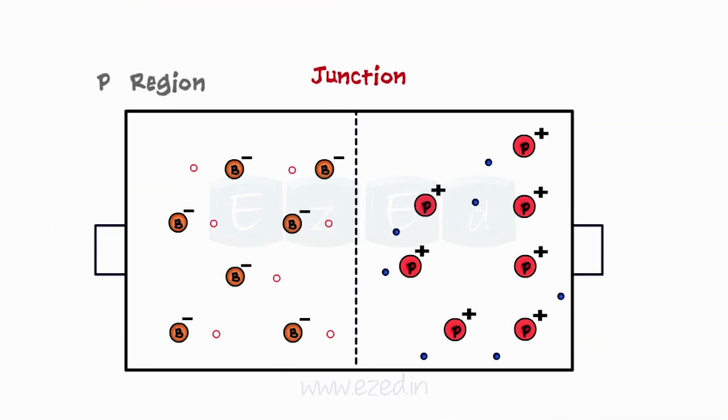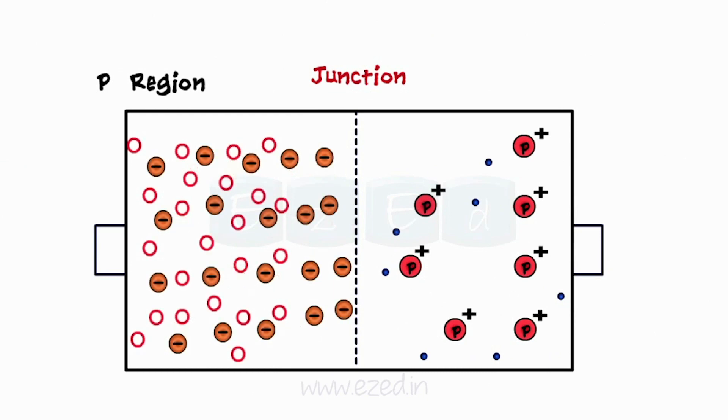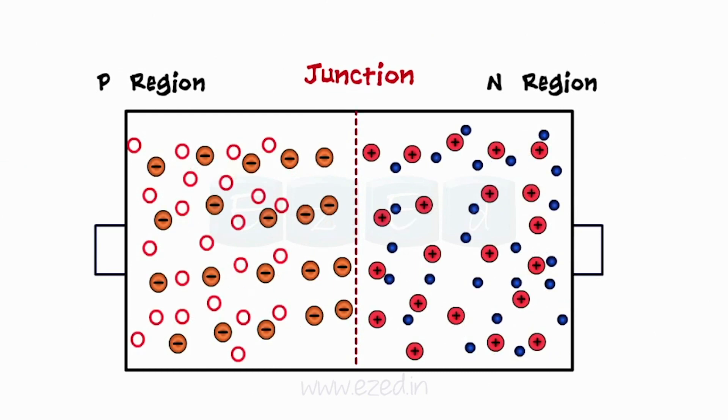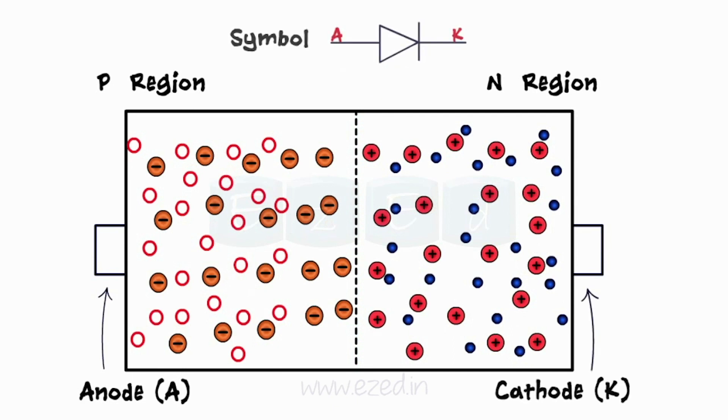As a result of this doping, an electrical isolation is formed between the two regions which depict a junction. The symbol of the diode is as shown.